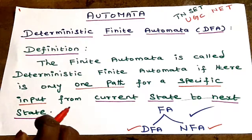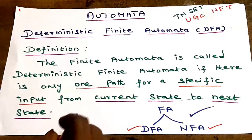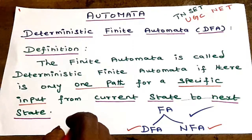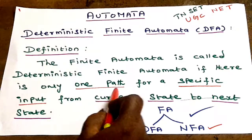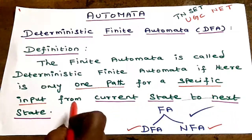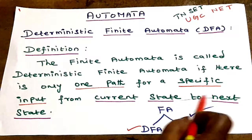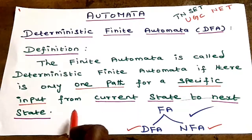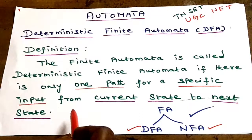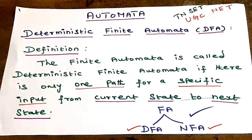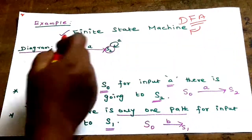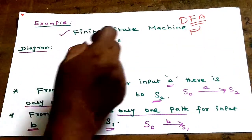In DFA, for a specific input, there is exactly one transition from the current state to the next state. One specific input leads to one path only. This is Deterministic Finite Automata — it is an example of a Finite State Machine.